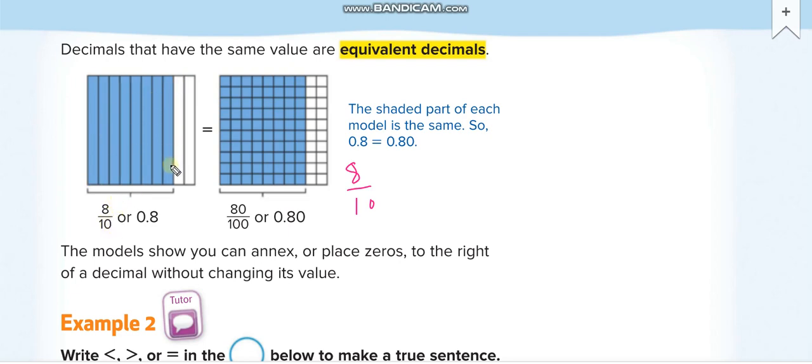Here they divided one whole, this time in hundred parts, because this is 0.80. The last digit is hundredths, okay? So they divided this one whole into 100 parts, and out of 100 parts they have 80. If you see the pictures, in both pictures the same part is shaded. The same part is shaded here and there.